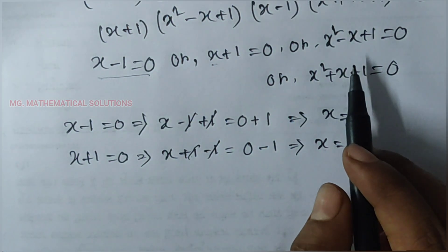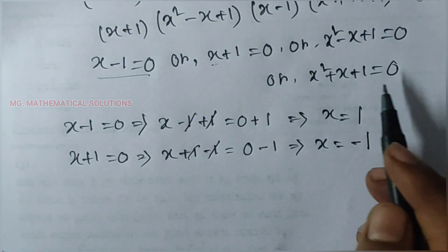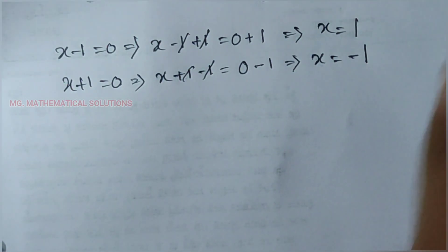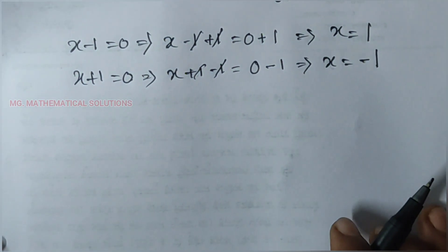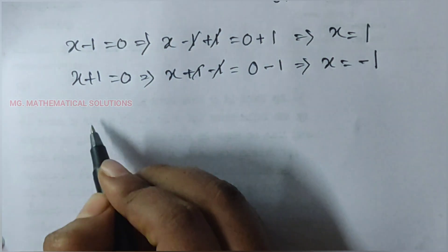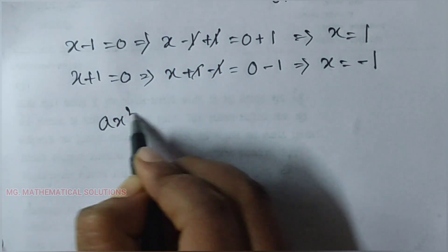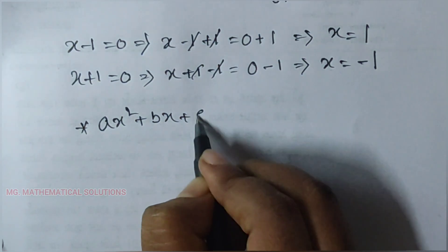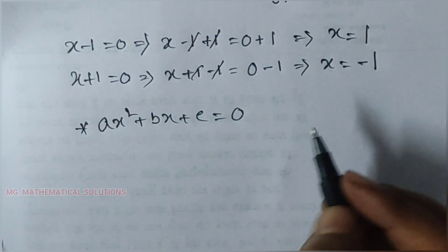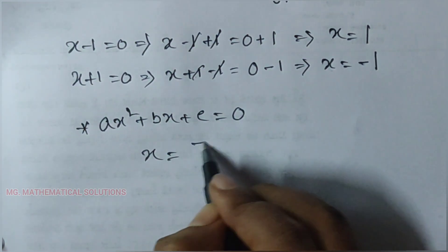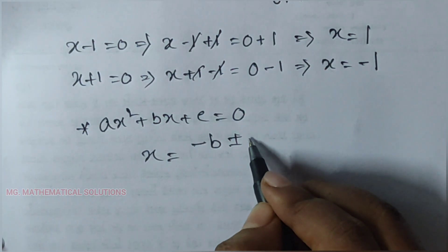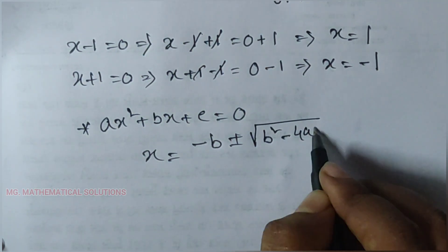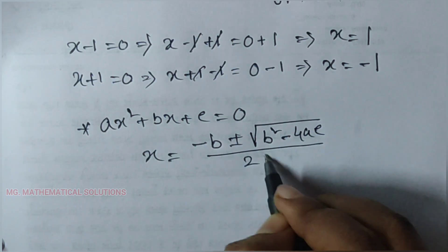Before solving these two quadratic equations, we learn a new formula — the Sridharacharya formula. If we have ax² + bx + c = 0, then x equals minus b plus or minus root over (b² - 4ac), all divided by 2a.